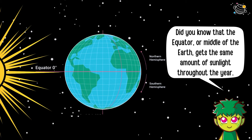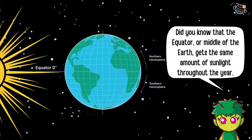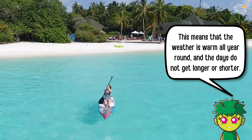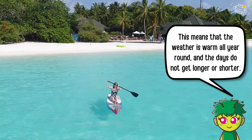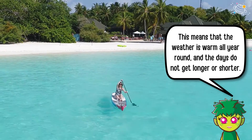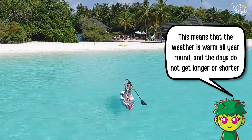Did you know that the equator, or middle of the Earth, gets the same amount of sunlight throughout the year? This means that the weather is warm all year round and the days do not get longer or shorter.